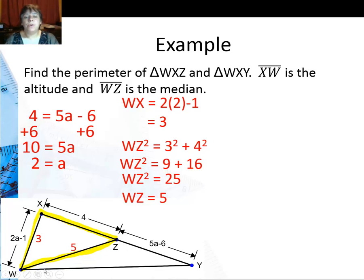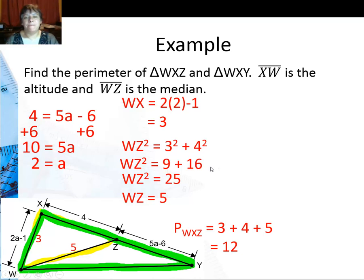Now I'm going to look for WY. Well first of all I've got to do my perimeter. 3 plus 4 plus 5 is 12 so the perimeter of this triangle is 12. Now I'm going to go ahead and work on the next triangle.